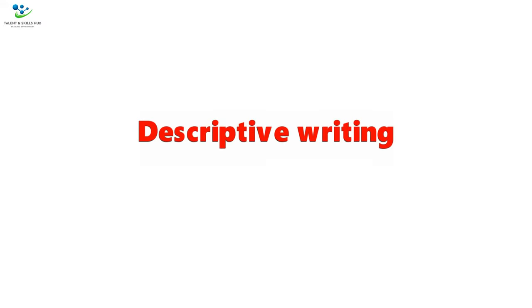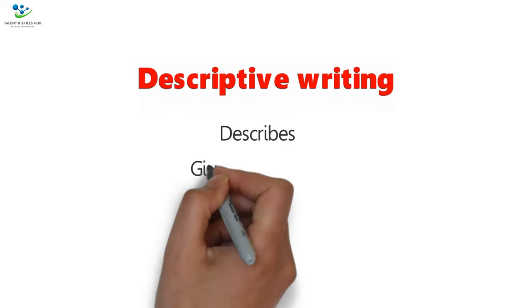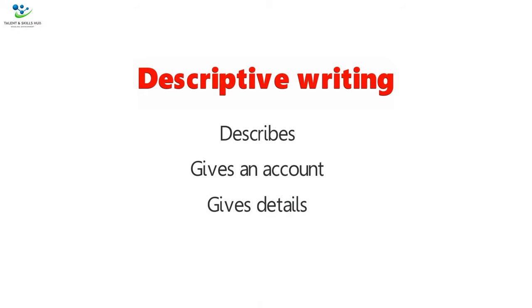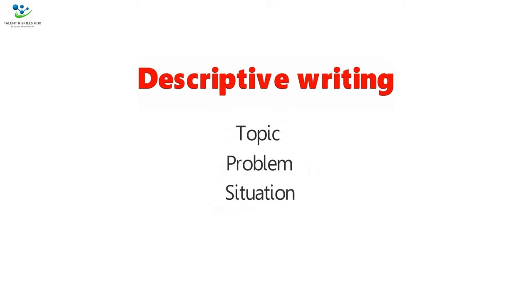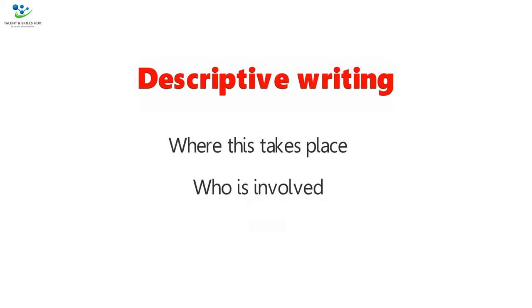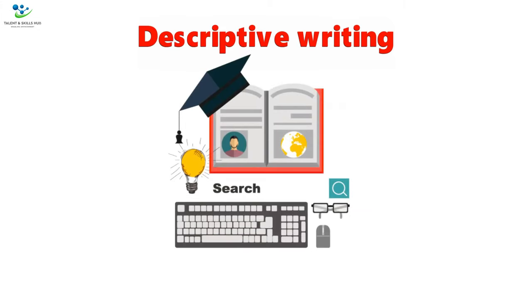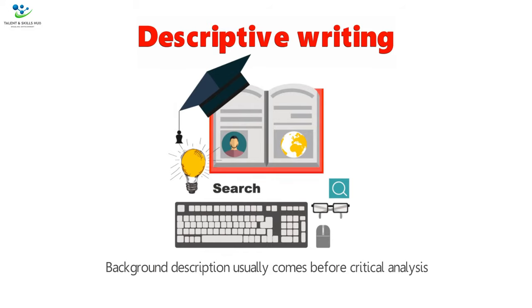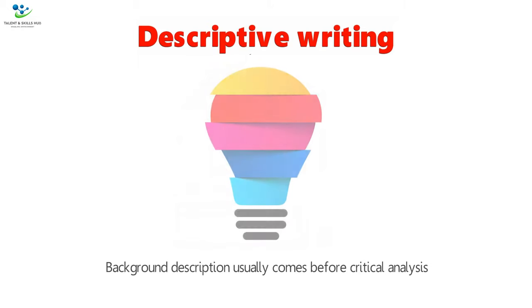Descriptive writing describes, or gives an account of, or gives details on what something is. It could be a topic, problem, situation, or context of the subject under discussion. It may describe where this takes place and who is involved when it occurs. It also provides background information to your discussion of the essay question. Background description usually comes before critical analysis, so that the reader can understand the topic you are critically engaging with.